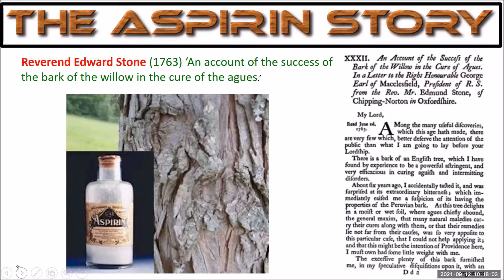The good reverend used what was known as the doctrine of signatures — the idea that nature leaves us clues about the healing power of plants. He knew that willow trees like wet boggy soil, so he figured it could cure illnesses that thrive in wet conditions. He collected some willow bark, dried it outside a baker's oven for a few months, pounded and sifted it, then experimented on his own fever, which amazingly disappeared. He then experimented on his parishioners and found it cured most of them of their agues; if that didn't work he added a bit of quinine — so maybe those patients actually had malaria. He wrote to the Royal Society in 1763 outlining the benefits of willow bark.